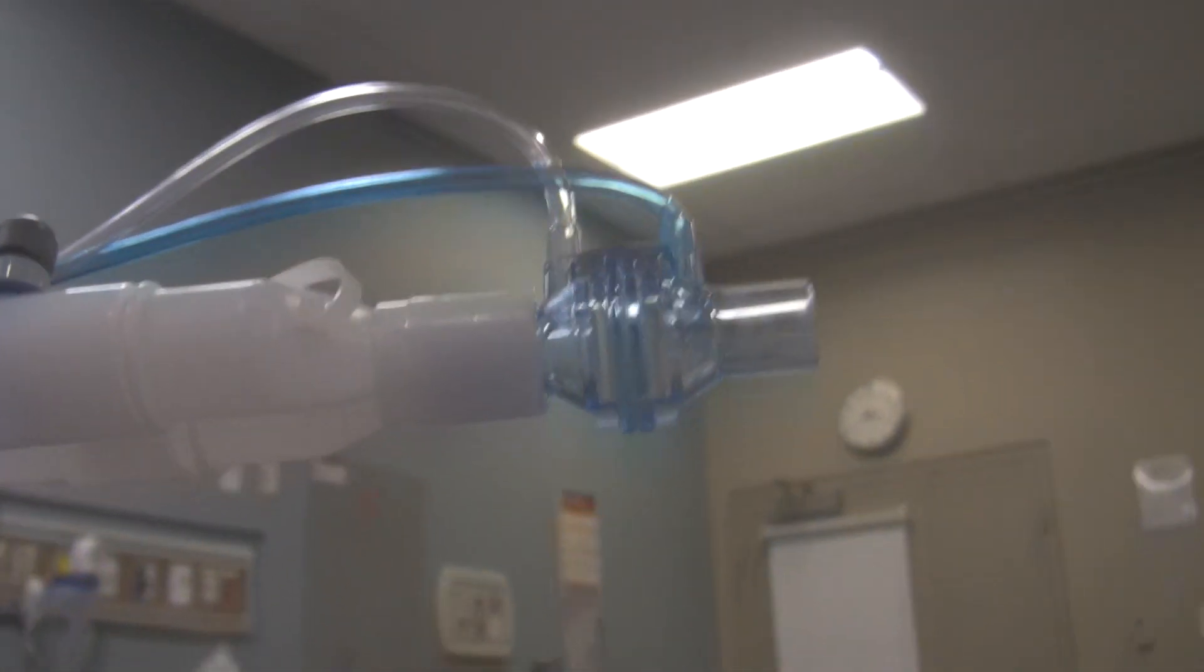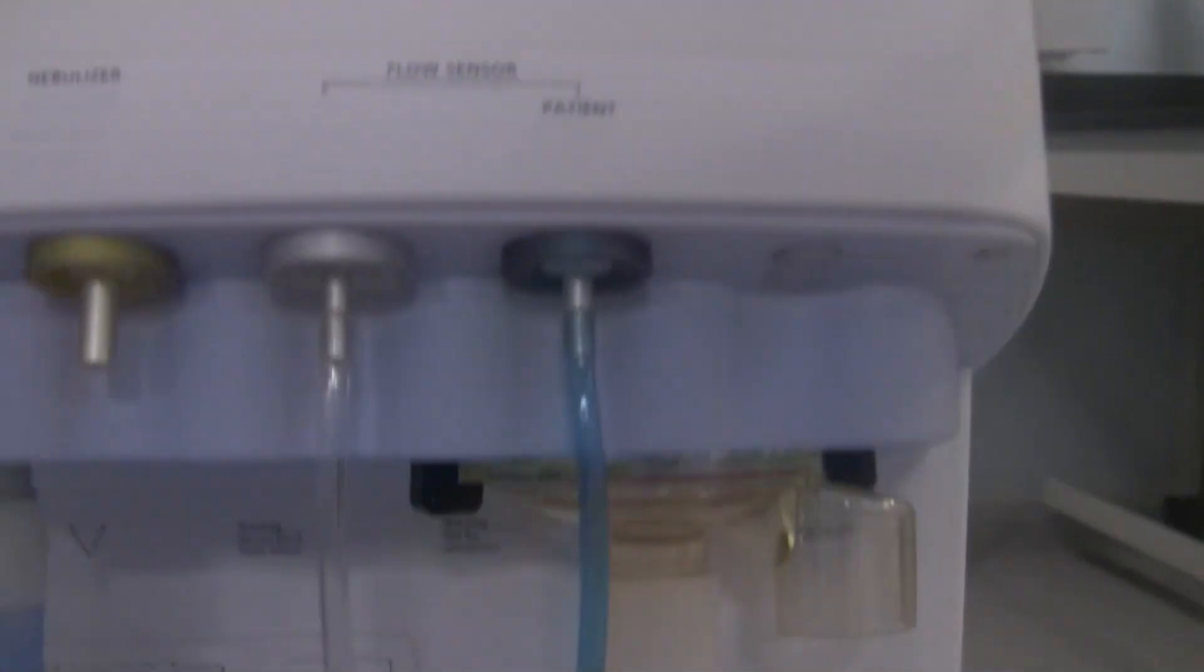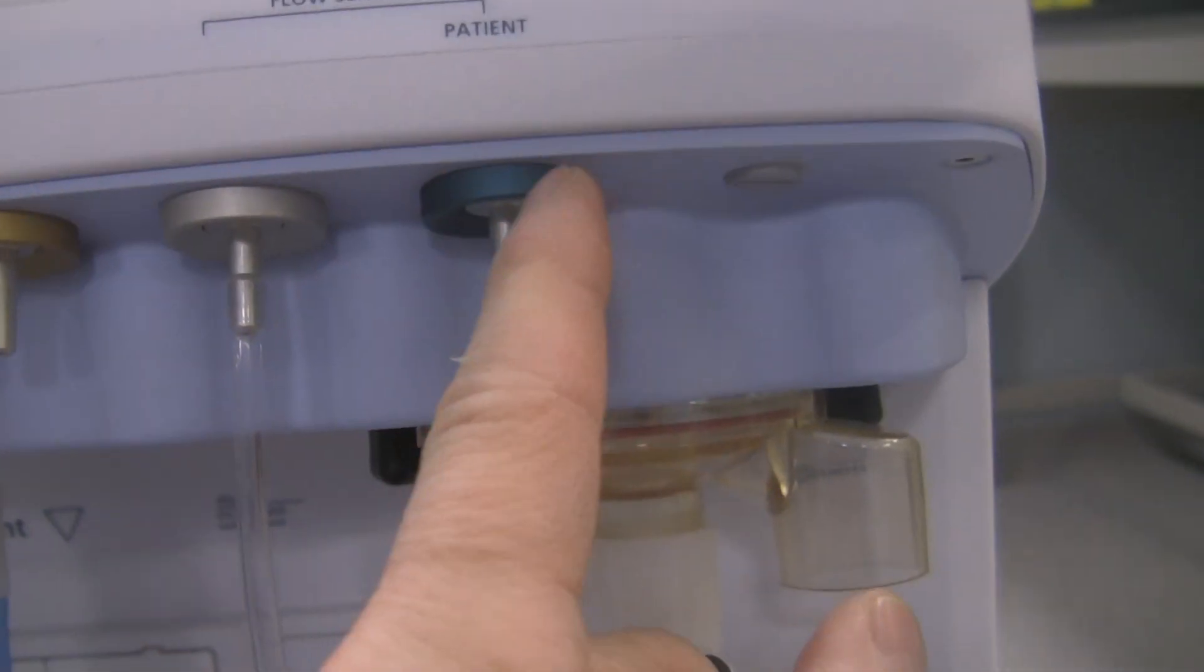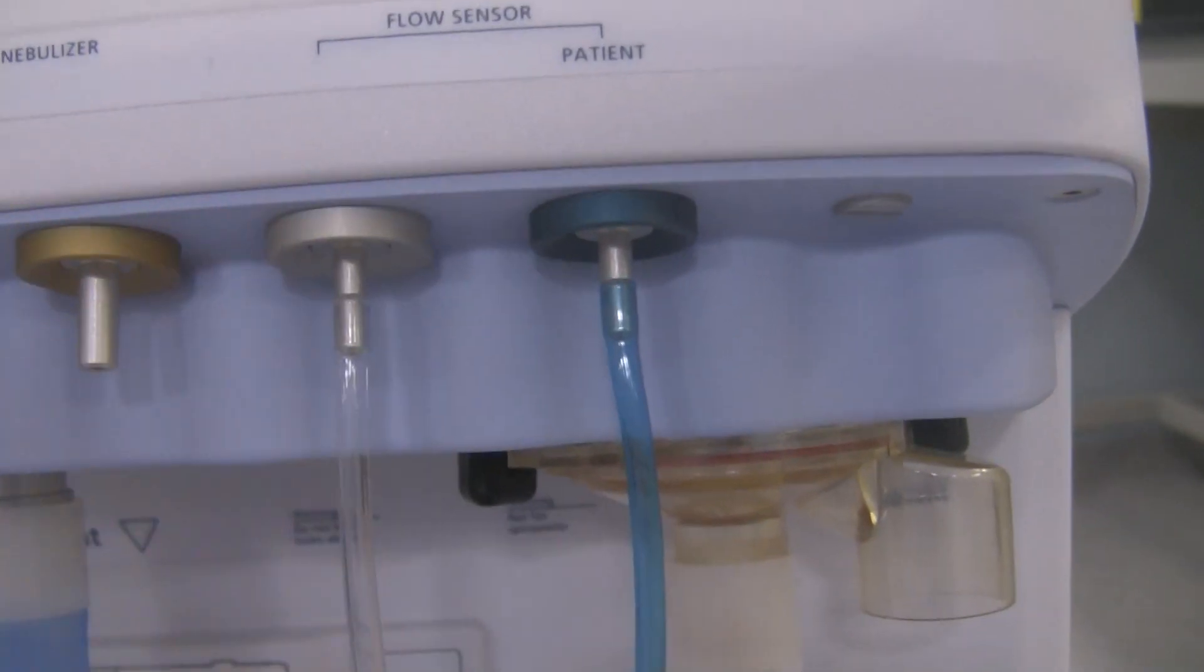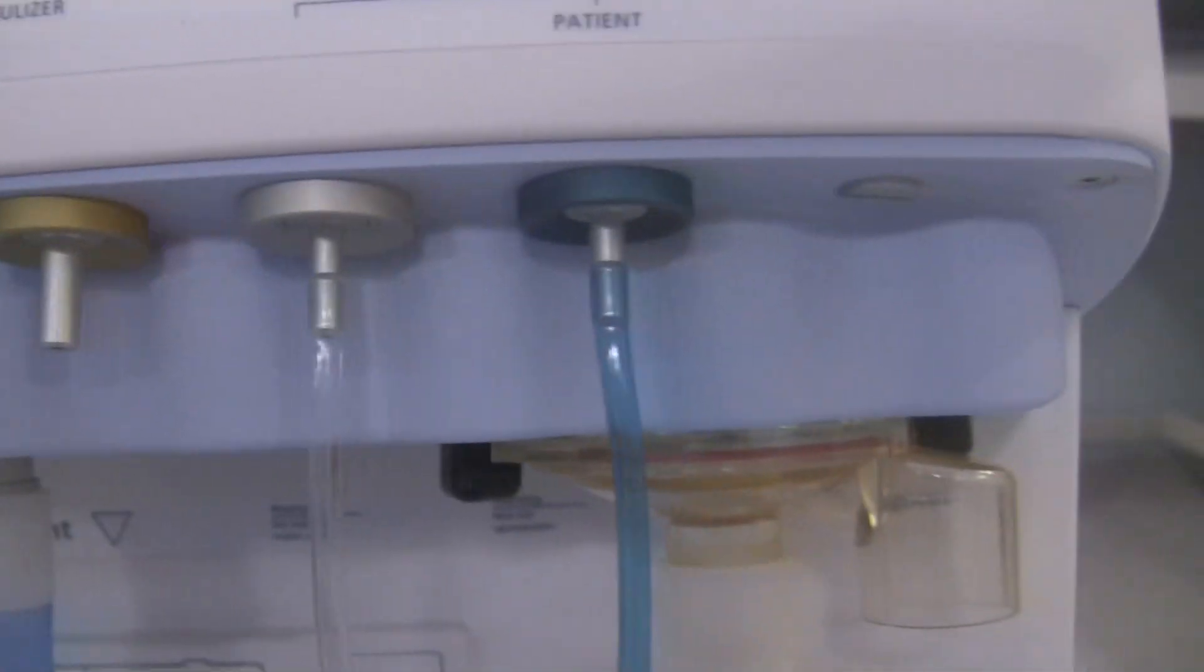The flow sensor is this device right over here that you'll see hooked onto the patient. It consists of a blue tubing and a clear tubing. The blue tubing of that flow sensor will travel all the way back here to the ventilator and you make sure the blue tubing is hooked up to the blue color-coded port and the clear tubing is hooked up to the silver port which is meant to mimic or represent clear.